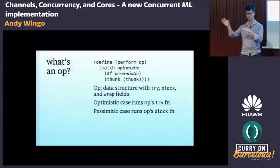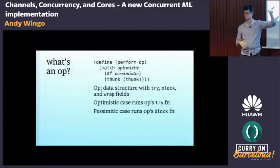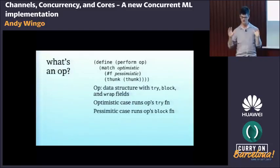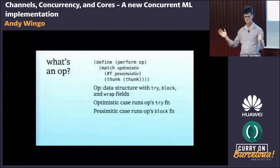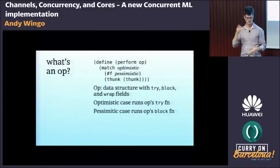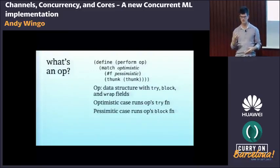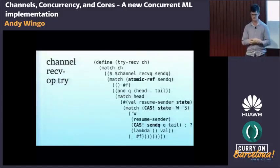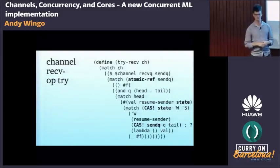This is what the two parts of a CML operation do in the `perform` function. You have an optimistic case and a pessimistic case. The optimistic case can always fail — it's purely an optimization. An `op` is a simple data structure with three fields: `try`, `block`, and `wrap`. The optimistic case runs `try`; the pessimistic case runs `block`; `wrap` is the annotation operator we saw before. Let's look at these for a channel receive.